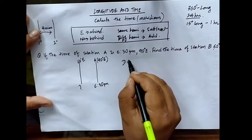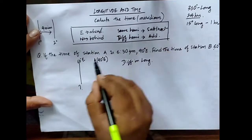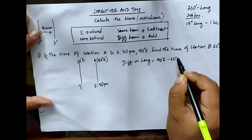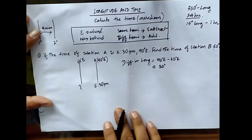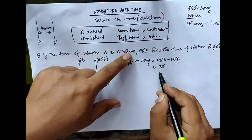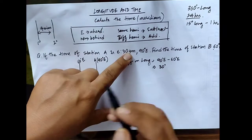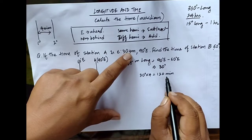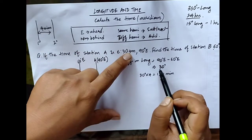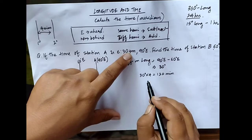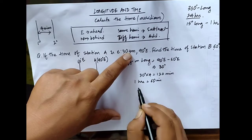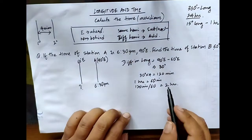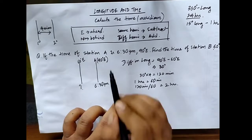First, we calculate the difference in longitude. Since they are in the same hemisphere, we subtract: 90 degrees minus 60 degrees gives a longitudinal difference of 30 degrees. To find the time for 30 degrees, we multiply by 4 minutes — that gives 120 minutes. Converting to hours by dividing by 60, we get a time difference of 2 hours.